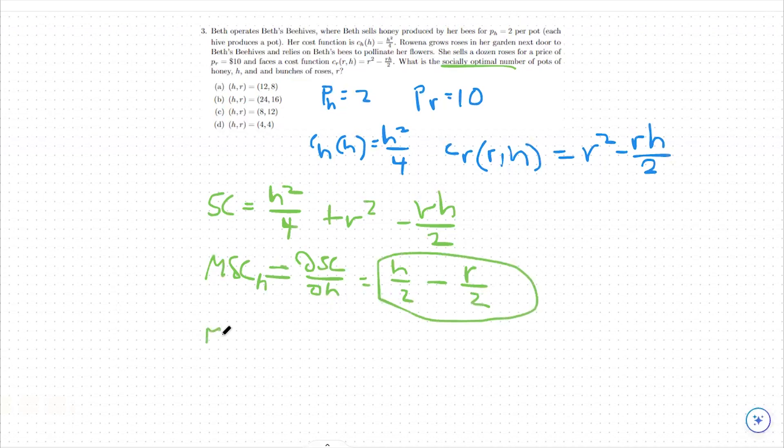We're going to do the same process for roses. We're going to take the derivative of the social cost function with respect to the variable r now. And what we're left with is 2r minus h over 2. So again, we're just taking the derivative of this piece, the derivative of this r² function. And then we're getting rid of this h² over 4 because there are no r terms in that term.